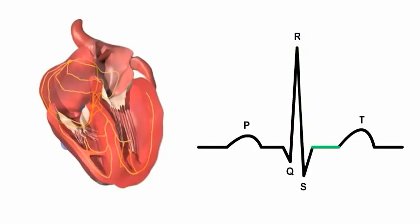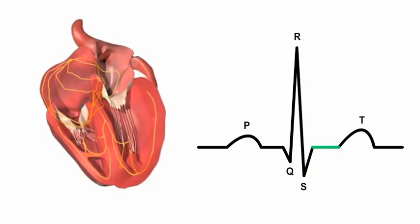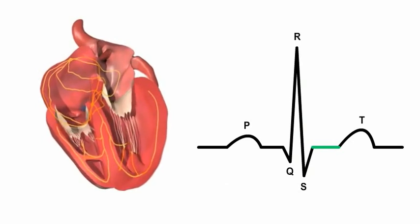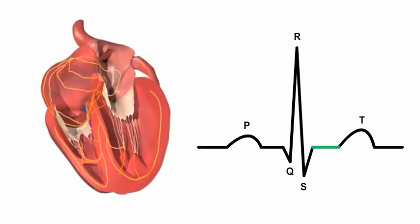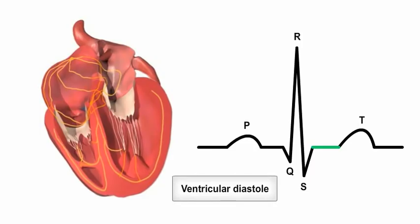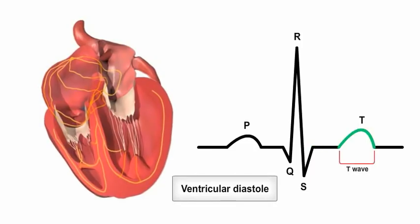Finally, as the signal passes out of the ventricles, the ventricular walls start to relax and recover, a state described as ventricular diastole. The dome-shaped T wave on the ECG marks this ventricular repolarization.